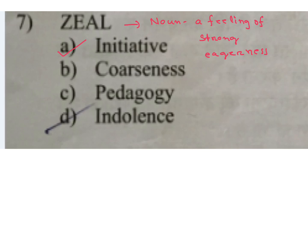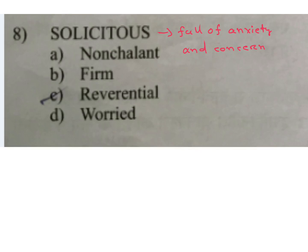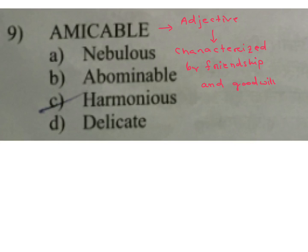Next word: Solicitous — meaning: full of anxiety and concern. Options A) nonchalant, B) far, C) reverential, D) worried. D is the answer. Next word: Amicable — meaning: characterized by friendship and goodwill. Options A) nebulous, B) abominable, C) harmonious, D) delicate. C is the answer — harmonious.